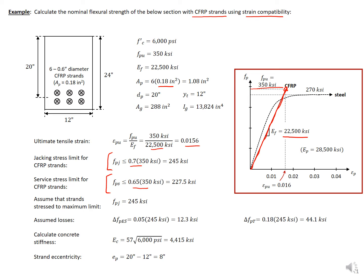We're going to assume the strands are stressed to the maximum jacking stress of 245 ksi. We assume pre-stress losses: 0.05 times the jacking stress for elastic shortening and 0.18 times the jacking stress for total losses. Losses can be found the same way as for conventional steel strands — elastic shortening, shrinkage, and creep — but we need a different expression for relaxation. Our concrete stiffness is 4,415 ksi, and our strand eccentricity is 8 inches.